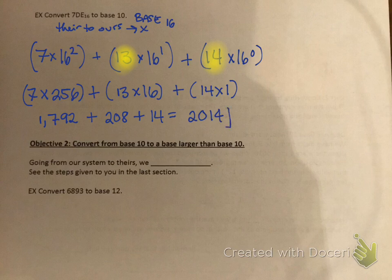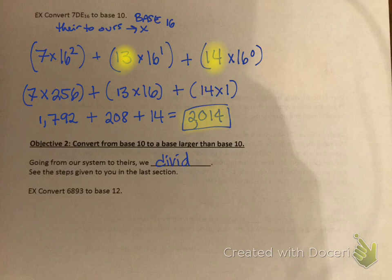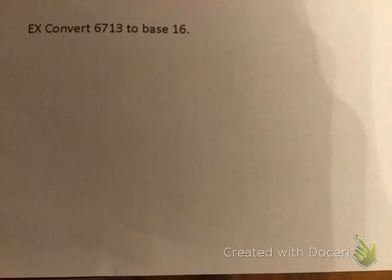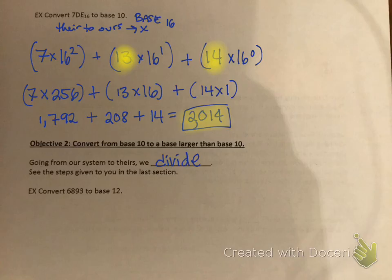So 7DE base 16 equals 2014 in base 10. Now we're working on the next objective: going from our system to theirs — base 10 to base 12. When going from base 10 to another base, we divide, because that's the harder direction. You can look at section 4.3 part 1 for review. We're going to convert 6893 to base 12.